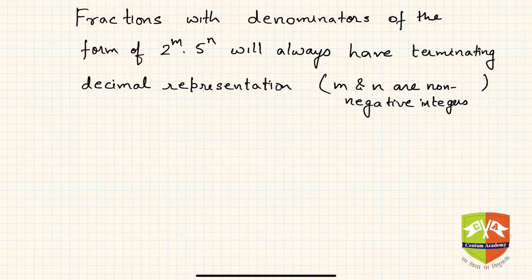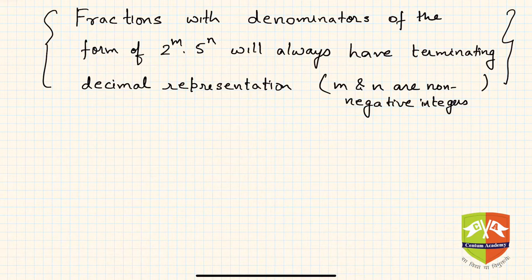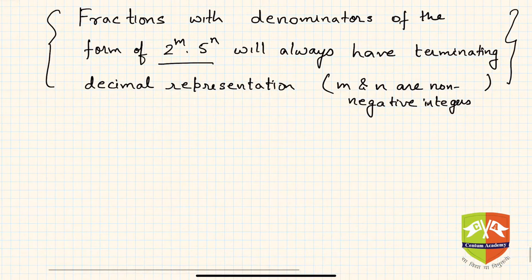Hello friends, welcome to this session on number systems. In the last session I promised I would tell you a trick on how to find out whether a particular fraction's decimal representation will be terminating or not. The trick is: fractions with denominators of the form 2 to the power m and 5 to the power n will always have terminating decimal representation, where m and n are non-negative integers — meaning zero, one, two, or any positive number.